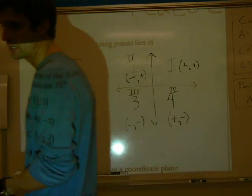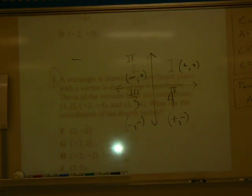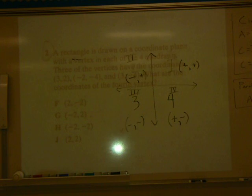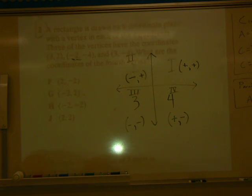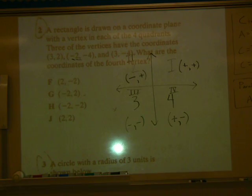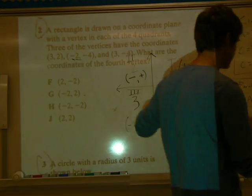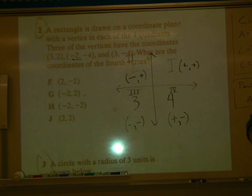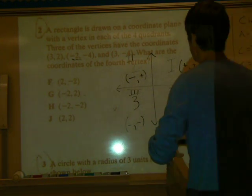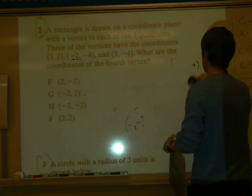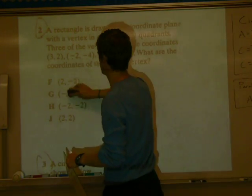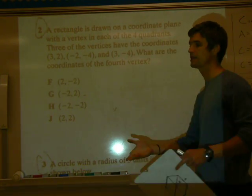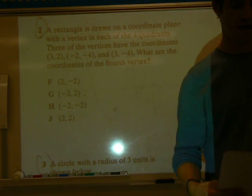Alright, so that's our number 1. Now let's take a look at number 2. A rectangle is drawn on a coordinate plane with a vertex in each of the four quadrants. Three of the vertices have the coordinates (3, 2), (-2, -4), (3, -4), what are the coordinates of the fourth vertex? Okay, so again, right now, plot those points. Make sure you can do it. Don't wait for me to do it because you know I'm about to do it in two seconds. But now let me show you.